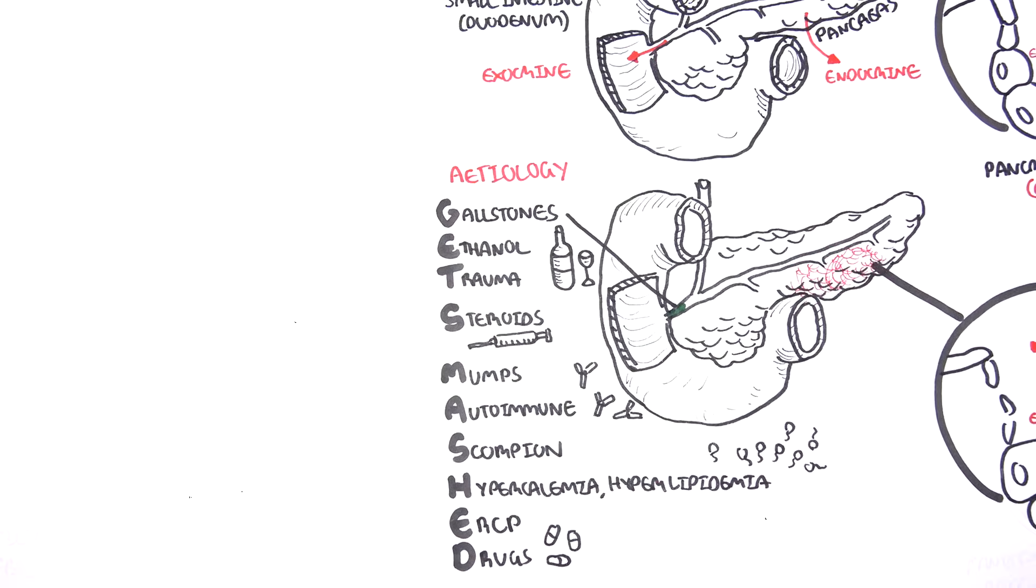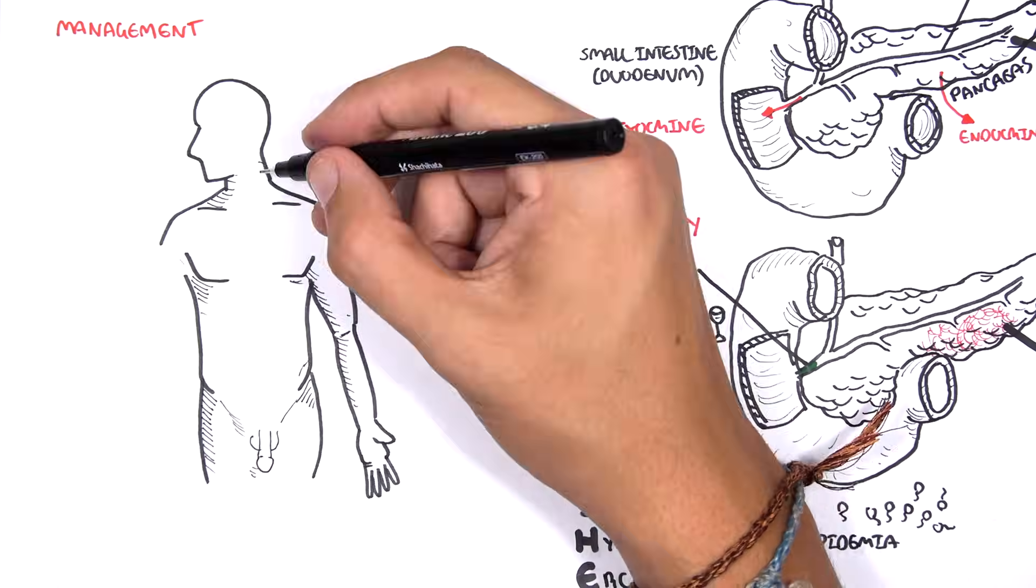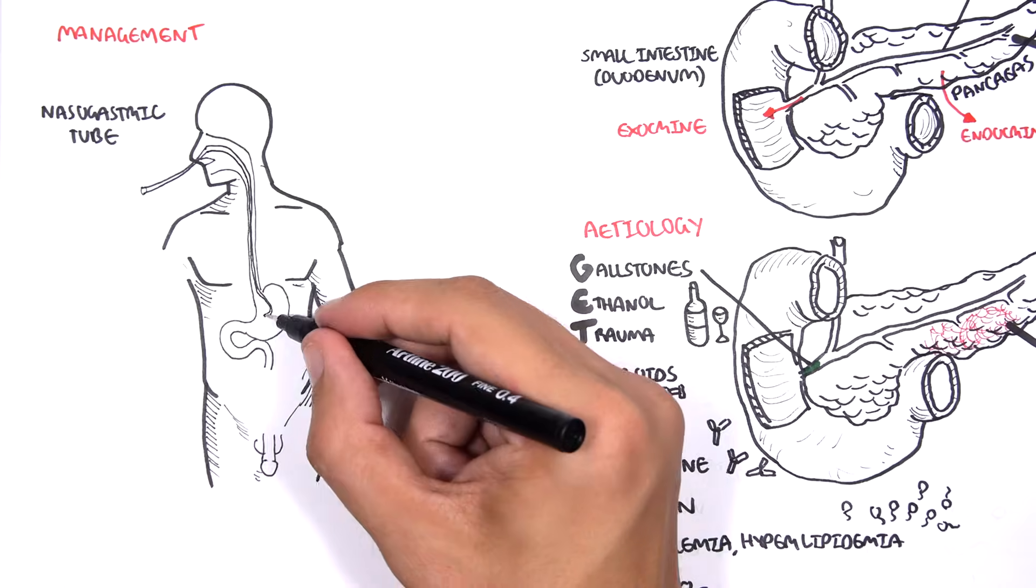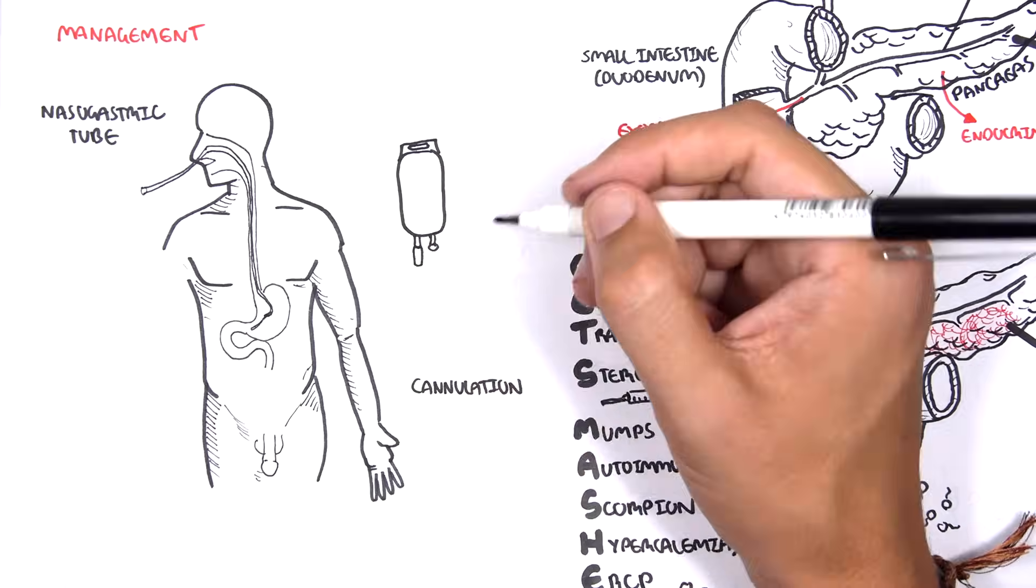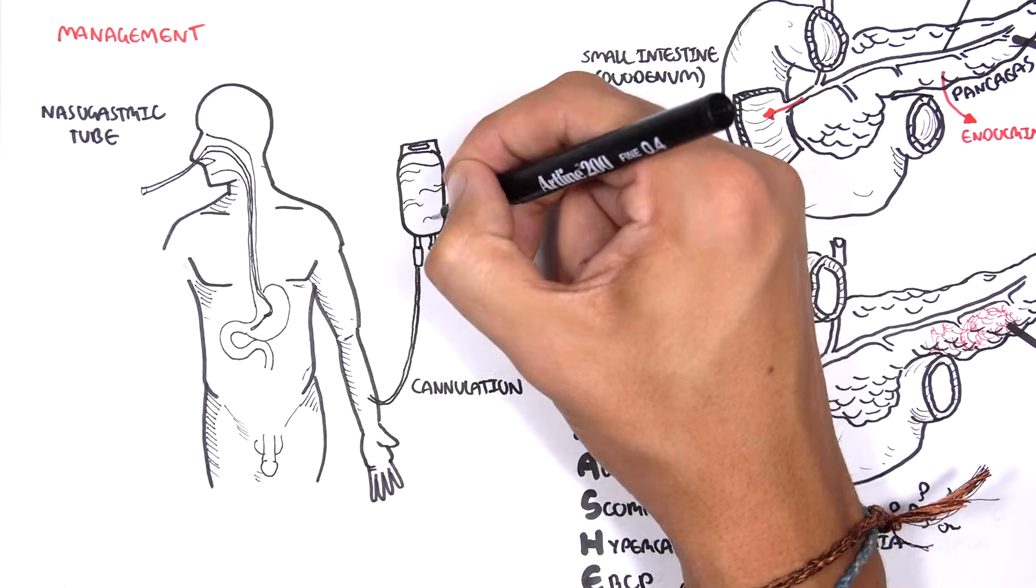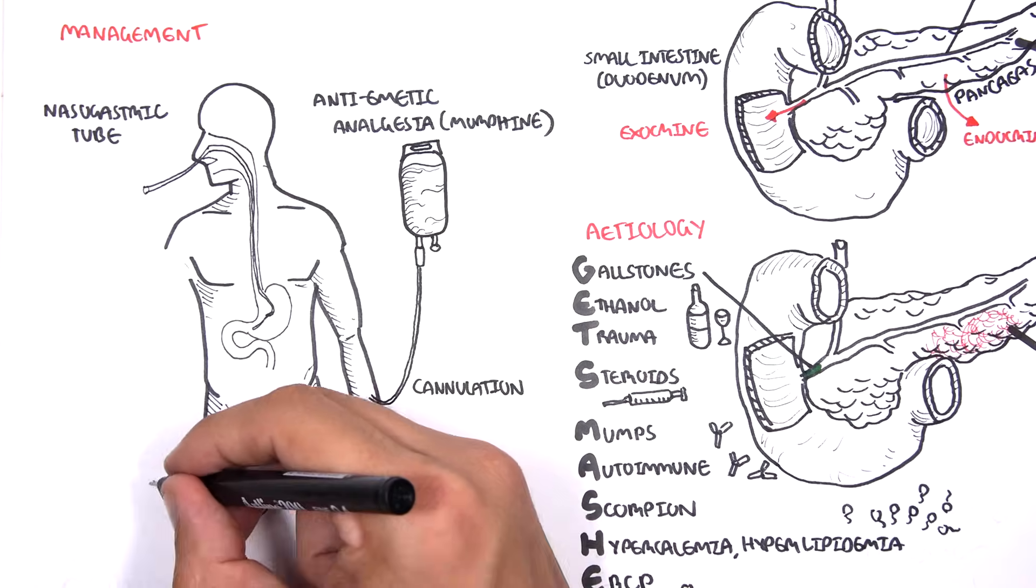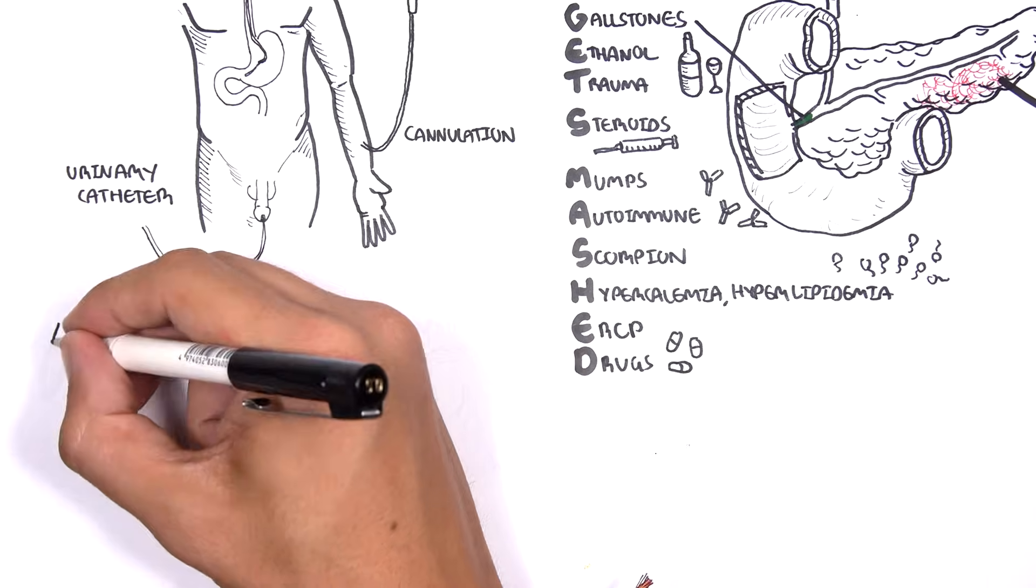The management of acute pancreatitis, firstly do not feed the patient by mouth, a nasogastric tube can be used. Cannulation for administration of fluids, as well as anti-emetic agents, and pain relief with analgesia, such as morphine.